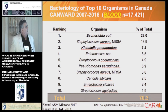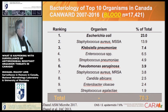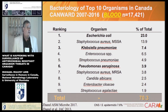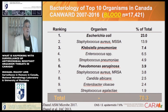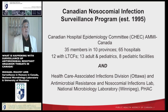Looking at the percentage of organisms causing bloodstream infections, you can see that gram negatives — E. coli, Klebsiella pneumoniae, Pseudomonas, Enterobacter — make up about 35% of all organisms. These are really the organisms I'm most concerned about, and they're on the top priority list because we're running out of antimicrobials to treat these types of infections.